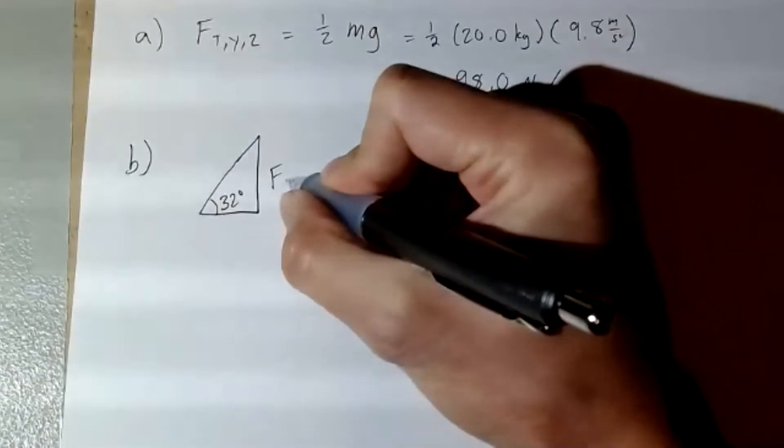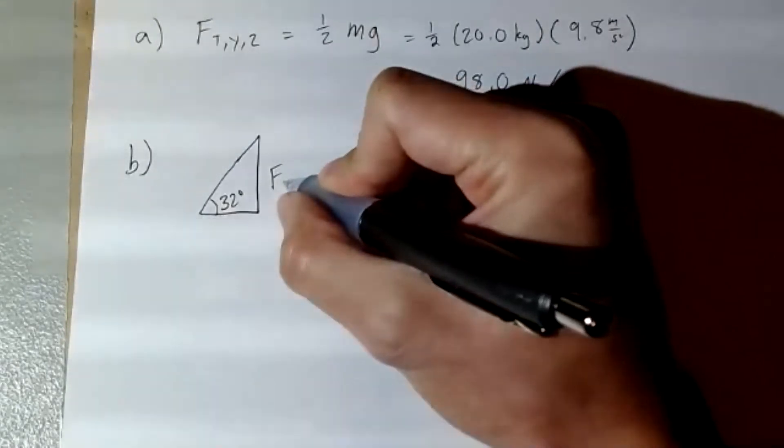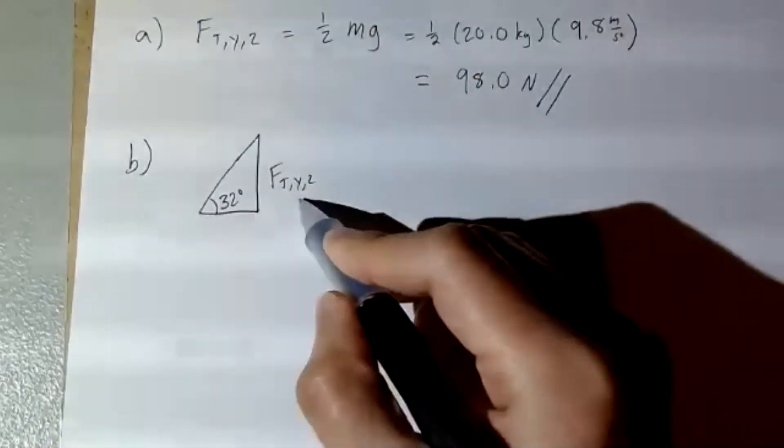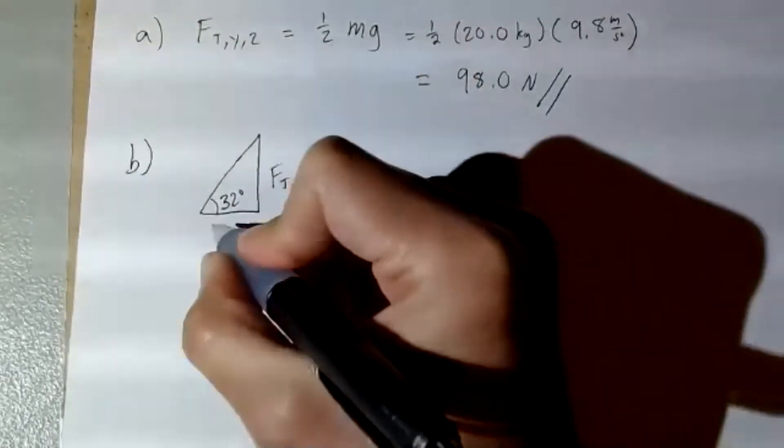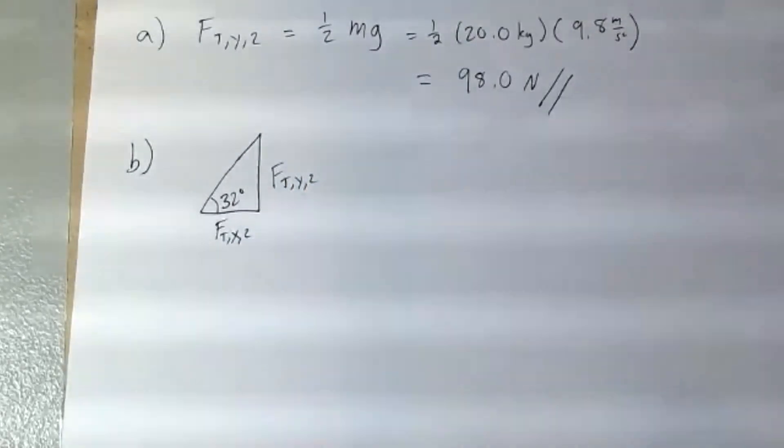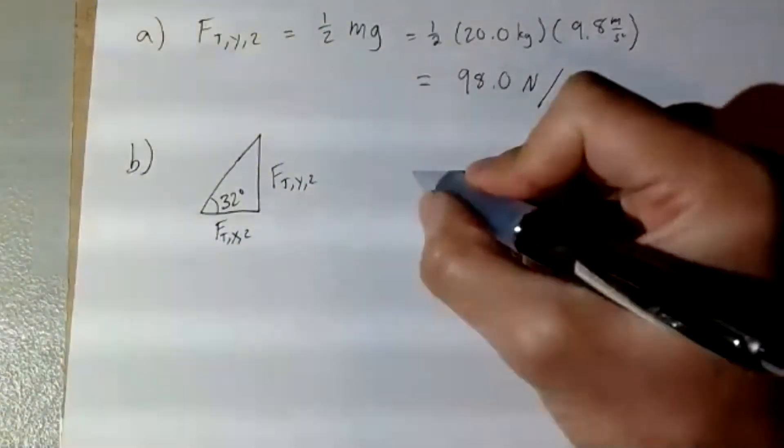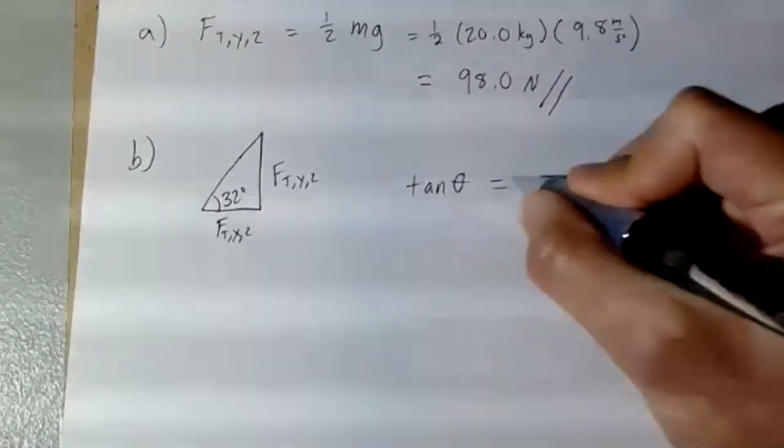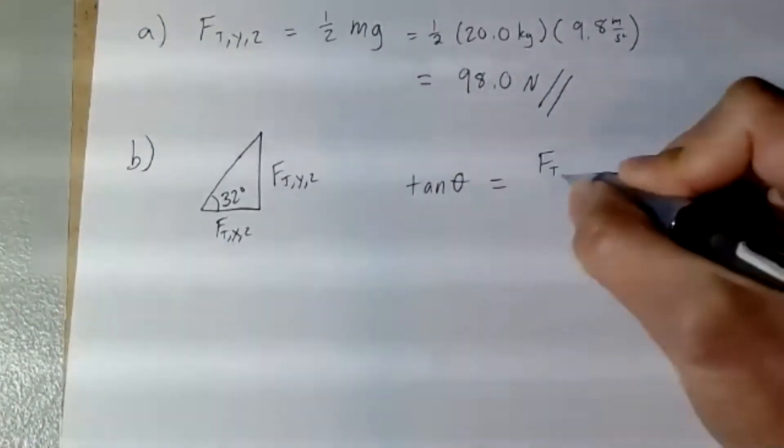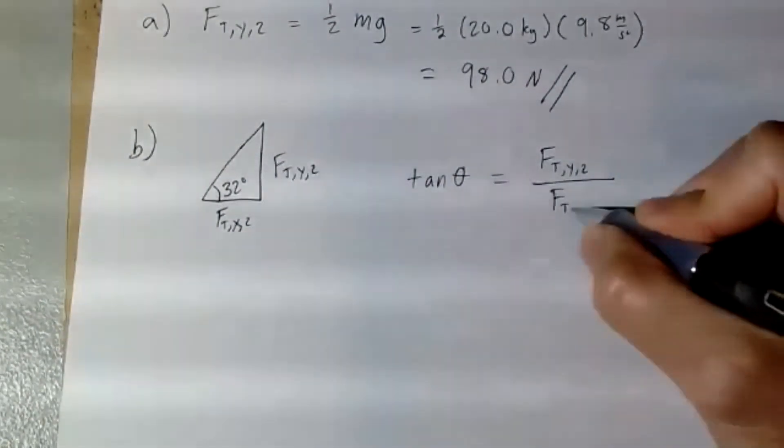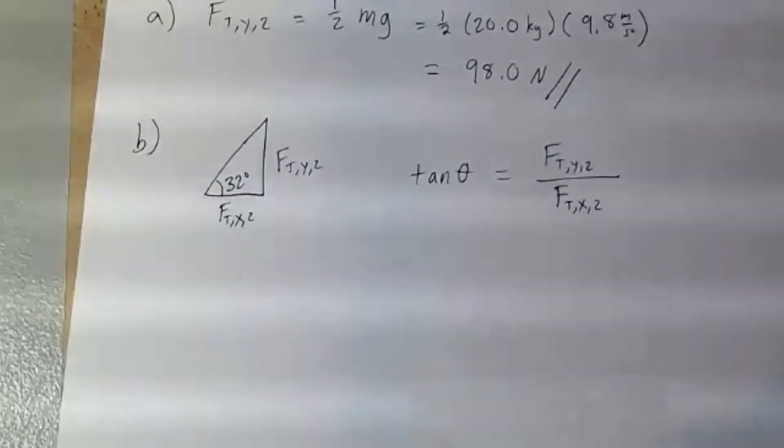Then you know that tangent of 32 degrees will be the ratio of the force tension in the y direction from rope two divided by the force tension in the x direction from rope two. So you can come up with the equation: tangent of theta equals the force tension y of the second rope divided by the force tension x of the second rope.